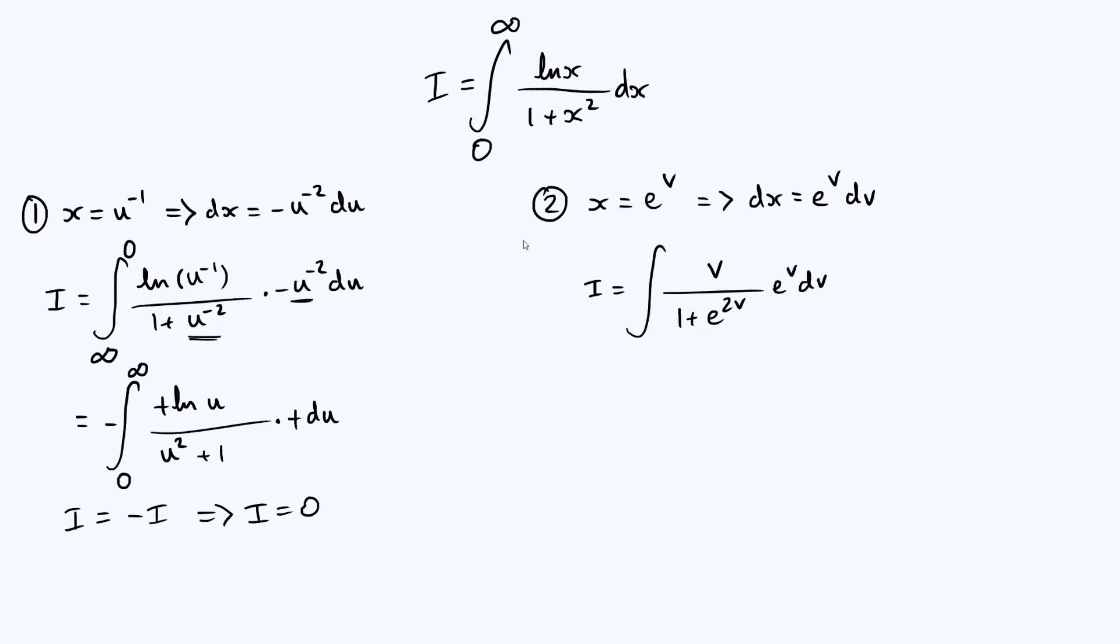Well, if we want x to be 0, then we're asking what power do we have to raise e to to get 0? So that technically can never happen. But as v tends towards minus infinity, then x tends towards 0. So our lower limit is going to be minus infinity. And our upper limit is still going to be infinity, right? Because as x tends towards infinity, the natural log of x also tends towards infinity. So that limit stays as it is.